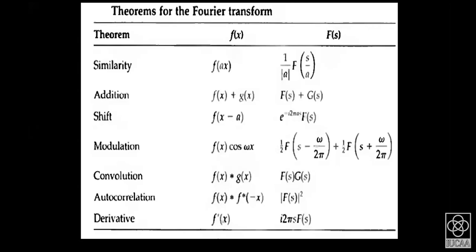There are many theorems associated with Fourier transforms that should be noted so they can be readily used in slightly different situations. For example, if we scale the x-axis by a factor a, nothing really changes in the other domain in terms of overall shape except the scaling of the axis by the inverse factor: if x is scaled by a, then s will be scaled down by the same factor, plus a normalization factor which can be appreciated by simple change of variables in the integral.